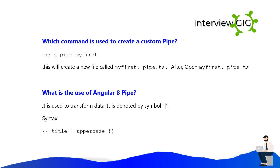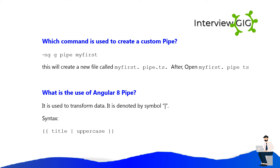Which command is used to create a custom pipe? The command is: ng generate pipe MyFirst. This will create a new file called MyFirstPipe.ts. After that, open MyFirstPipe.ts.